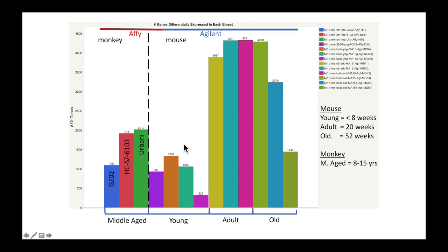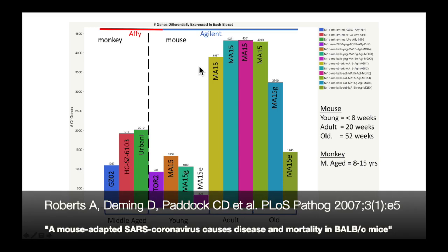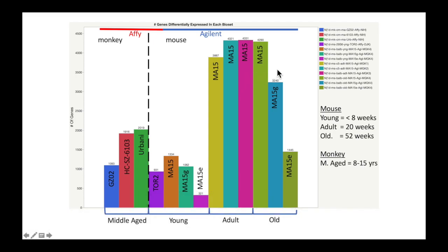Just as we did with the biosets from the monkey, we can now look at the different strains of virus used in the mouse studies. There were four different strains. TOR2 was isolated from the human virus in Toronto. We also have the MA15, which was used the most — a viral strain of coronavirus specifically engineered to go after mice, producing fairly severe symptoms. We also have the MA15 gamma and MA15 epsilon variants. It's my opinion that they mutated this MA15 in different places, which had a different effect on its potency.